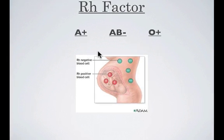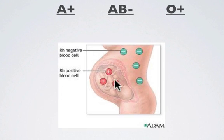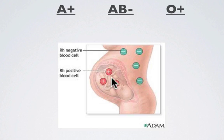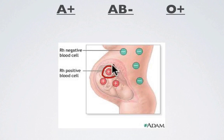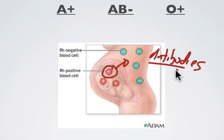Let's say mom has an RH negative blood type — in this example, AB negative. Baby number one has a positive blood type, maybe because dad had a positive blood type, since RH positive is dominant. Sometimes during delivery, mom and baby's blood are going to mix. If mom's blood gets introduced to this positive factor, mom's body will start developing antibodies to select against the positive factor. That's not a big deal with the first birth — mom and baby go on and everybody's fine.